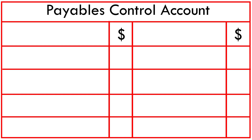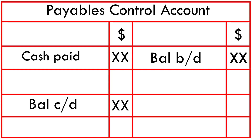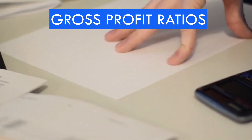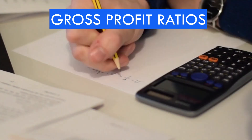The same case applies to the payables control account. As you can see, I also have the balance brought down and the balance carried down, and the cash paid during the year. So if I add the debit side and deduct the credit side, what I end up with is the credit purchases.